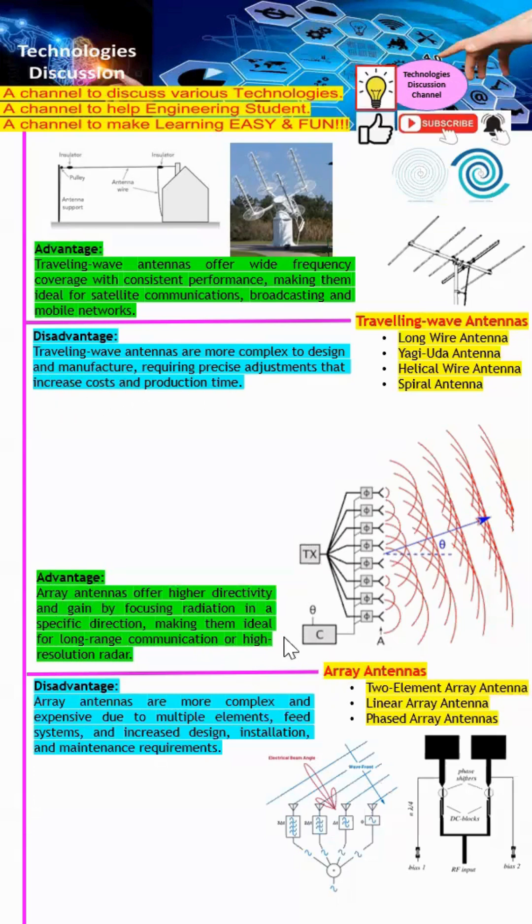Next will be array antenna. Array antennas offer higher directivity and gain by focusing radiation in a specific direction. However, they are also very complex and expensive due to multiple elements, feed systems, and increased design rules. With this, thank you. You can take a look at the playlist under the description.